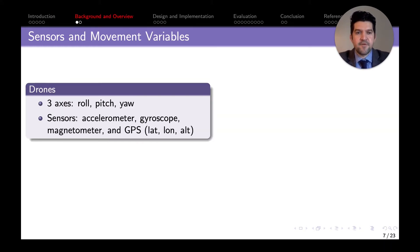When it comes to sensors and movement variables, the drone mainly interacts with three axes: roll, pitch, and yaw. The main sensors that we care about are the accelerometer, gyroscope, magnetometer, and GPS.